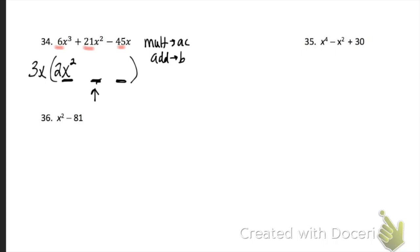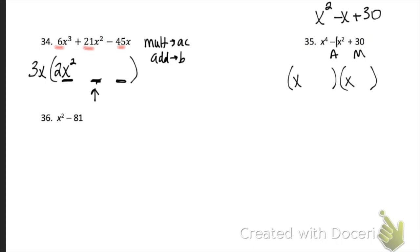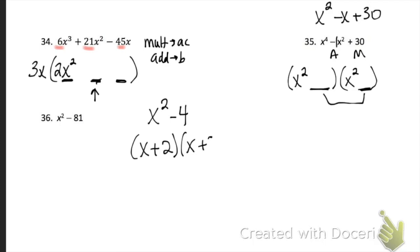Problem 35 looks a little different since it has x⁴ and x², but it's just like simpler factoring. Figure out what multiplies to 30 and adds to negative 1, then instead of x plus or minus a number, you'll have x² plus or minus a number. These two numbers are whatever multiplies to 30 and adds to negative 1. Problem 36 is a difference of squares — take the square root of x² and the square root of 4 to get (x + 2)(x − 2).